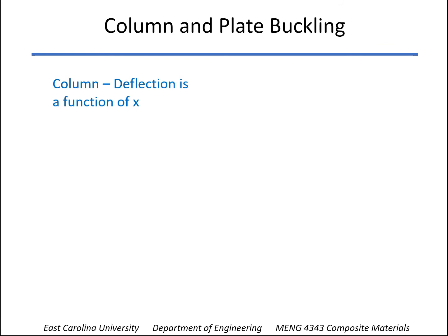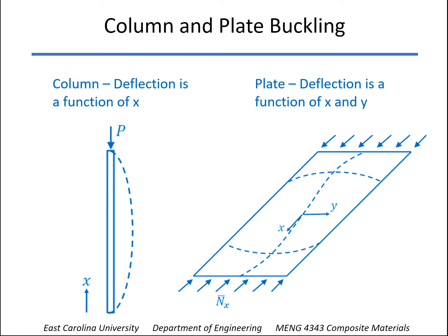A little bit of difference between column and plate buckling. In Mechanics of Materials, you looked at column buckling, and you found that the deflection was a function of the coordinate x along the length of the column. And if it was simply supported, the buckling shape actually was a half of a sine wave, and different end conditions would give you a little bit different shapes there.